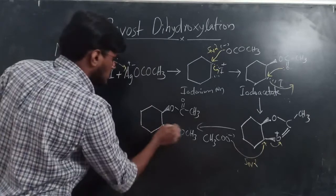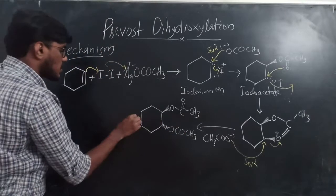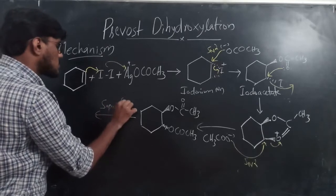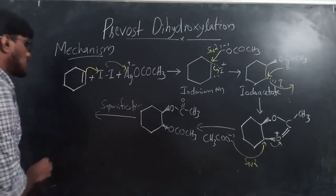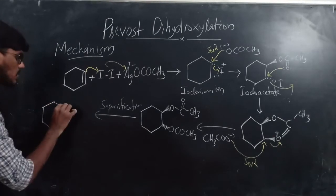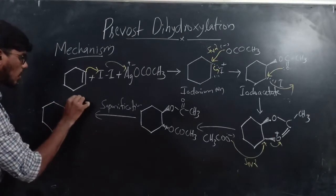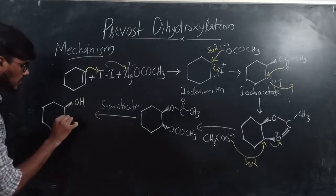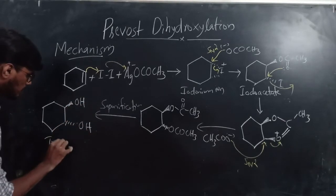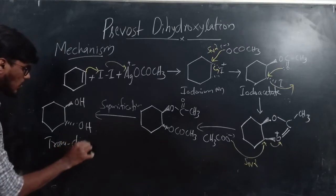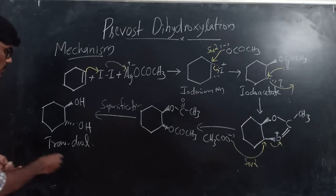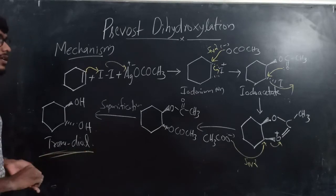This diacetate product, with two acetate groups attached, on saponification gives a diol with OH and OH groups. This is a trans-diol. In Prevost dihydroxylation, the product is a trans-diol.